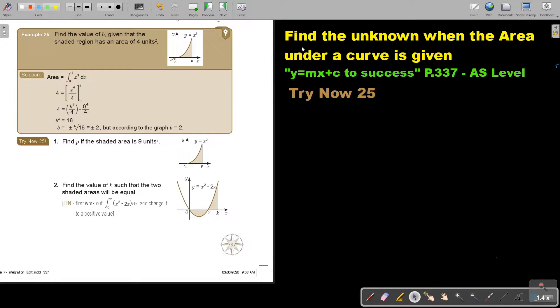In this video, we are going to find the unknown, like ABC, a variable, when the area under a curve is given. You will find this on page 337 in the Namibia AS level mathematics textbook Y equals MX plus C to success.